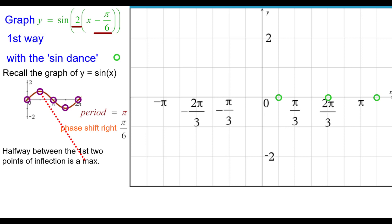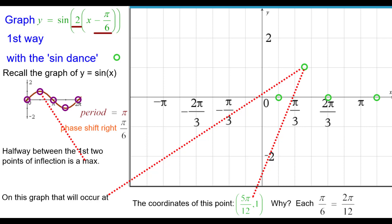Halfway between these two first points of inflection is a maximum. On our graph, it's going to occur halfway between these two, which is in between pi over 3 and pi over 2. Halfway between. The coordinates of that point are going to be 5 pi over 12, 1. And you might want to know why or how did I get that. Well, think of each pi over 6 as 2 twelfths pi. So this would be 2 twelfths, 4 twelfths, this would be 6 twelfths, and halfway between would be 5 twelfths.